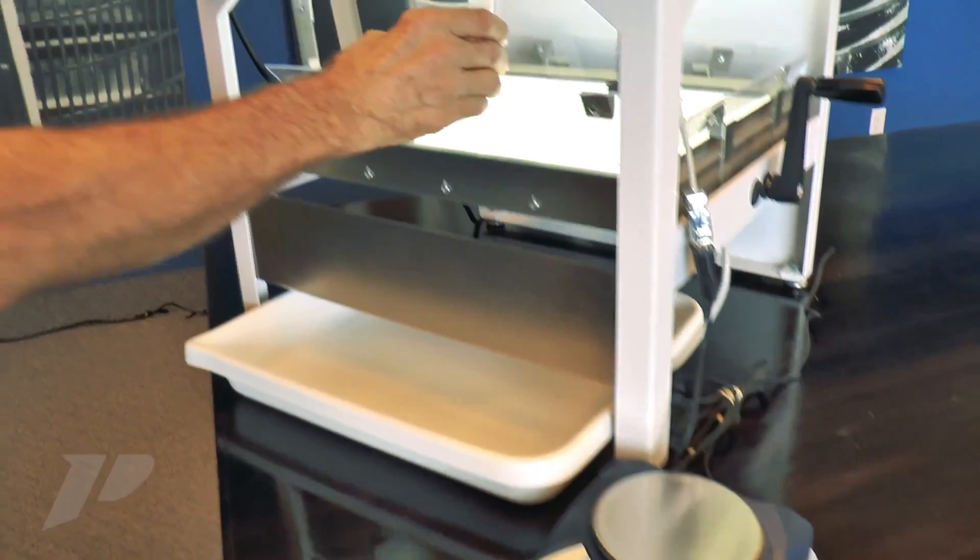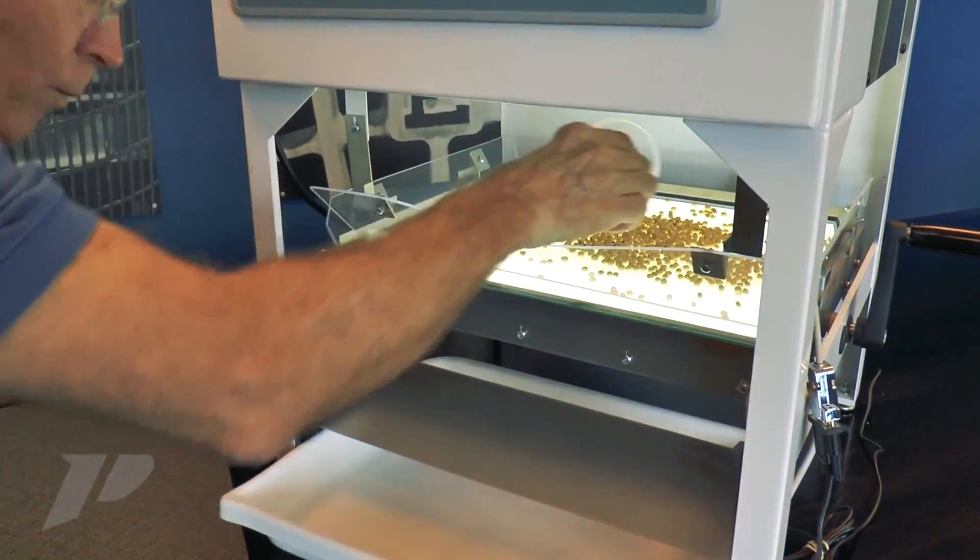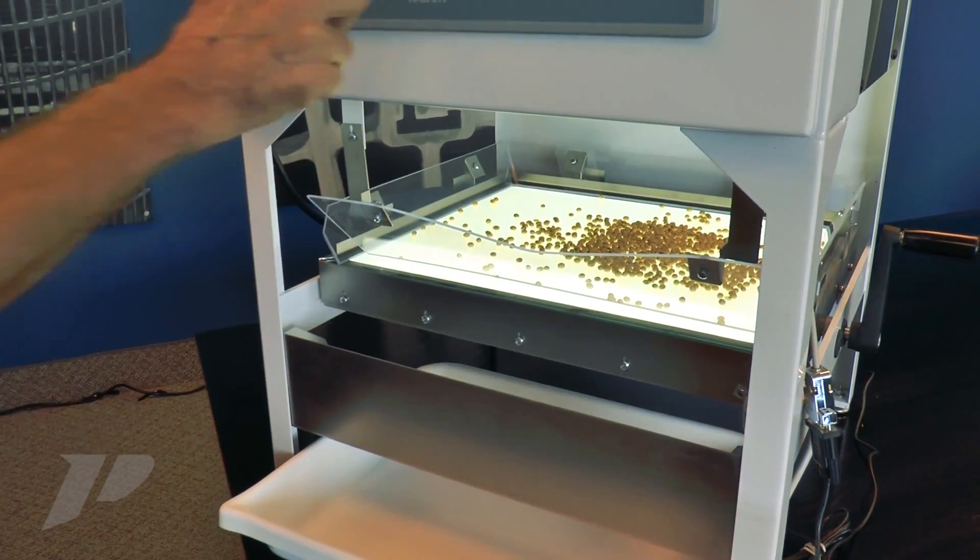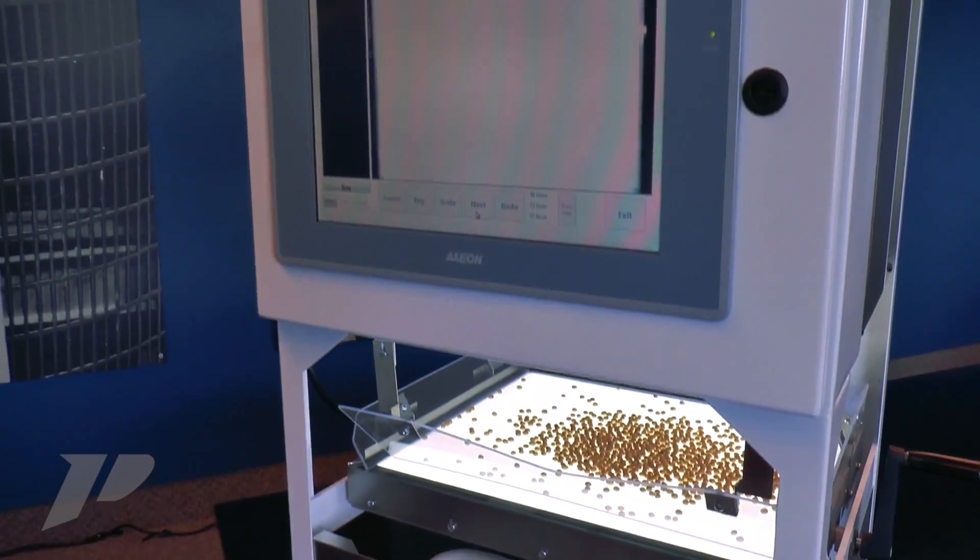The weight has been collected from the scale. I'm going to pour the product on the stage and spread it out a little bit. When I click next, the system will vibrate to monolayer the product, and then we'll take an image and count it.